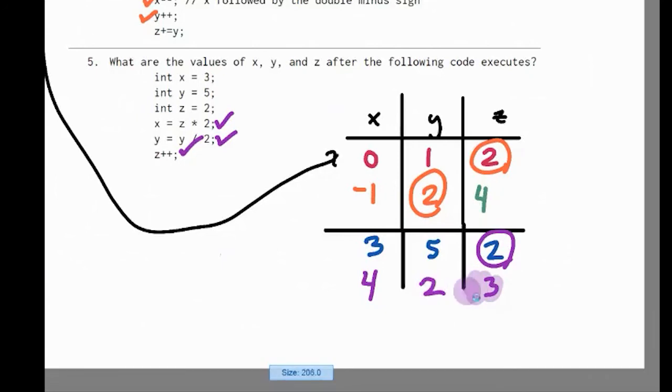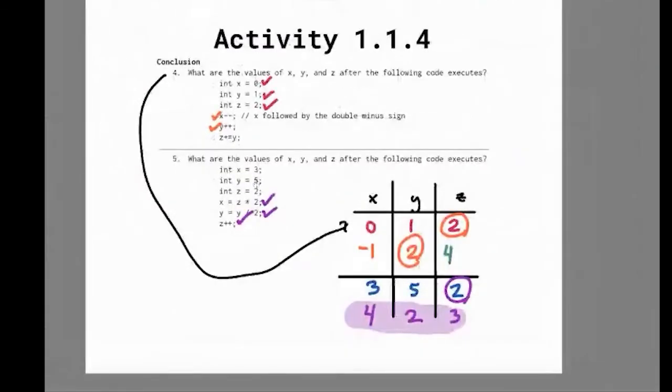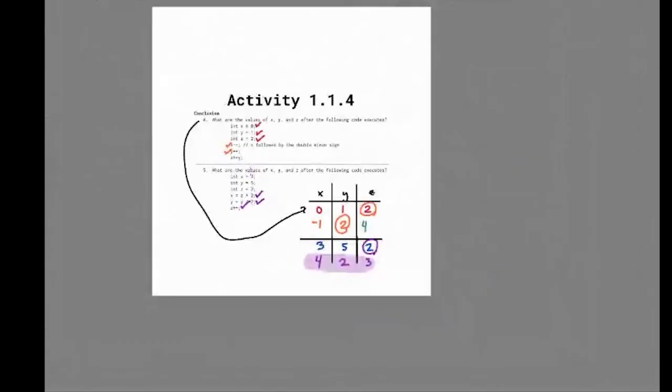But again, you can check these by just copying and pasting the code into Java. I'm just showing you code tracing so you know what to do on quizzes and tests where you wouldn't be allowed to use, you wouldn't be able to program anything. It's just all pencil paper or pen paper.